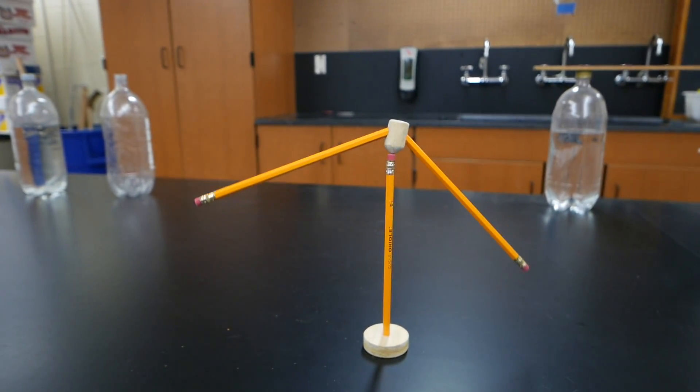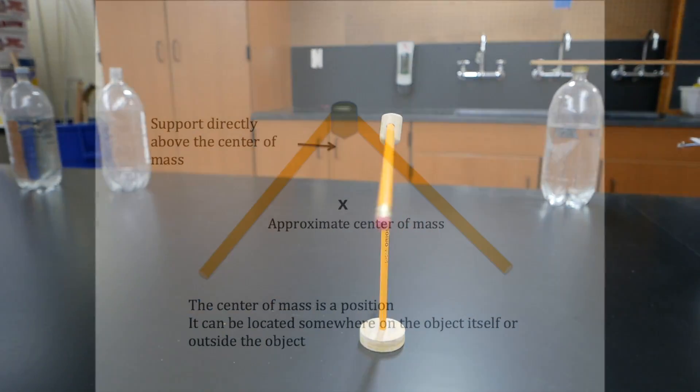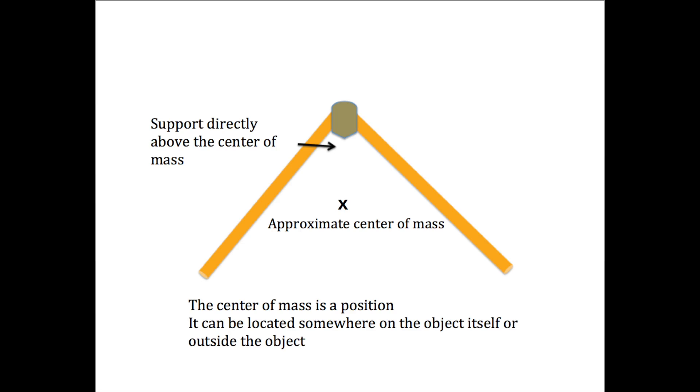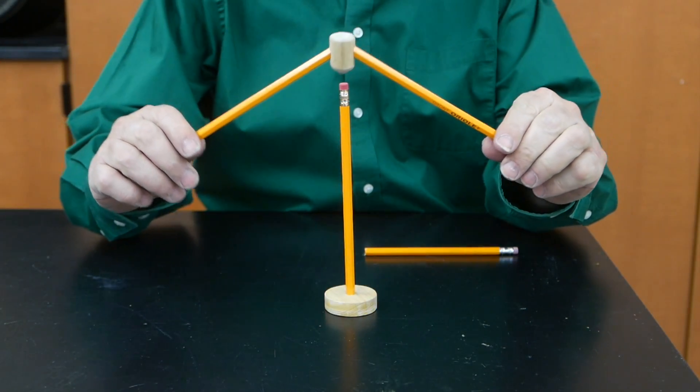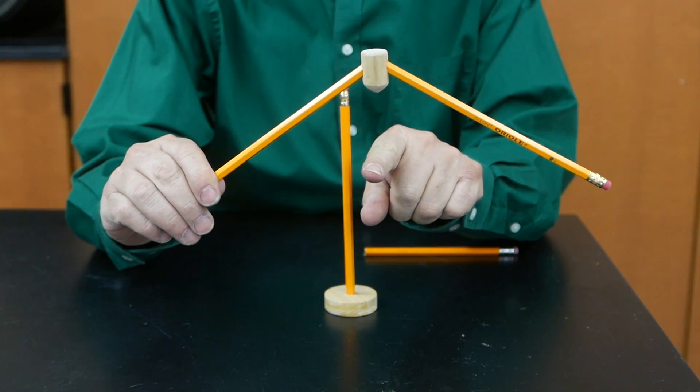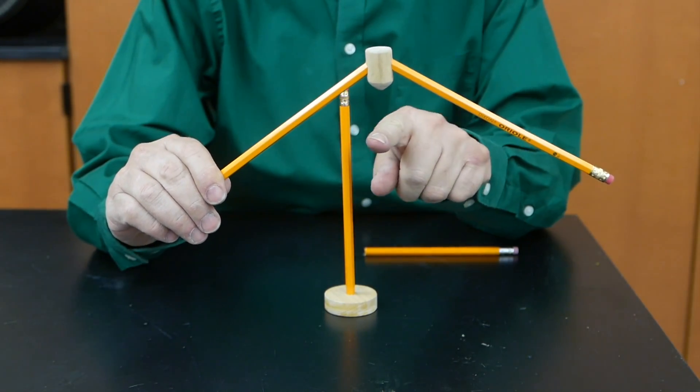In some cases the center of mass isn't actually located directly on the object. So here's the approximate location of this center of mass for these pencils. The center of mass is down here and we're supporting directly above it and that's where it balances.